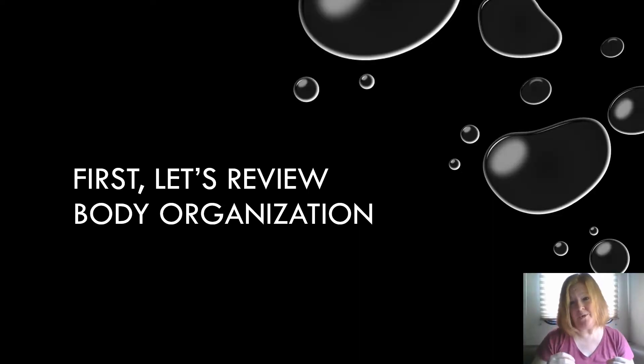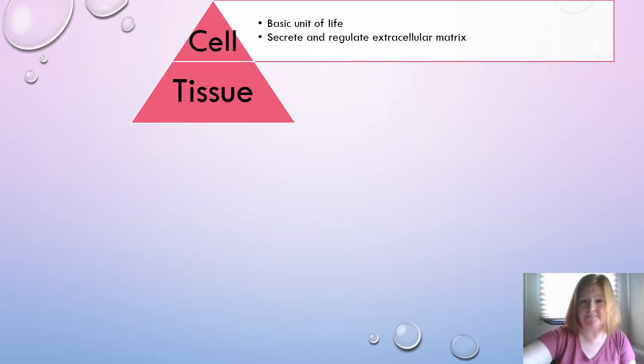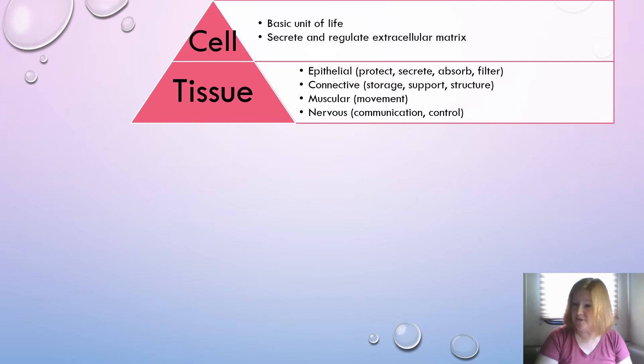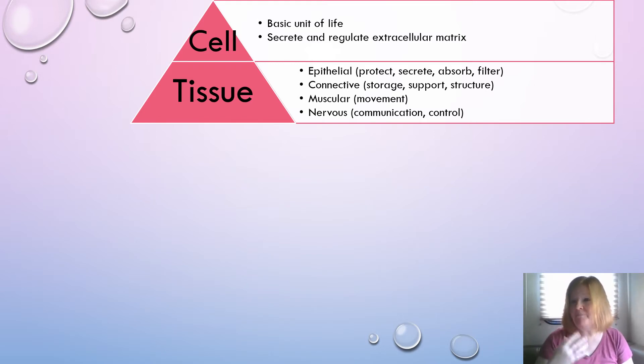Let's review body organization from the last unit. A cell is the basic unit of life; it secretes and regulates the extracellular matrix in addition to performing its cell function. Tissues are groups of cells that function together. There are four main types of tissues: epithelial, connective, muscular, and nervous, each with major functions we'll cover when we go over each tissue type.